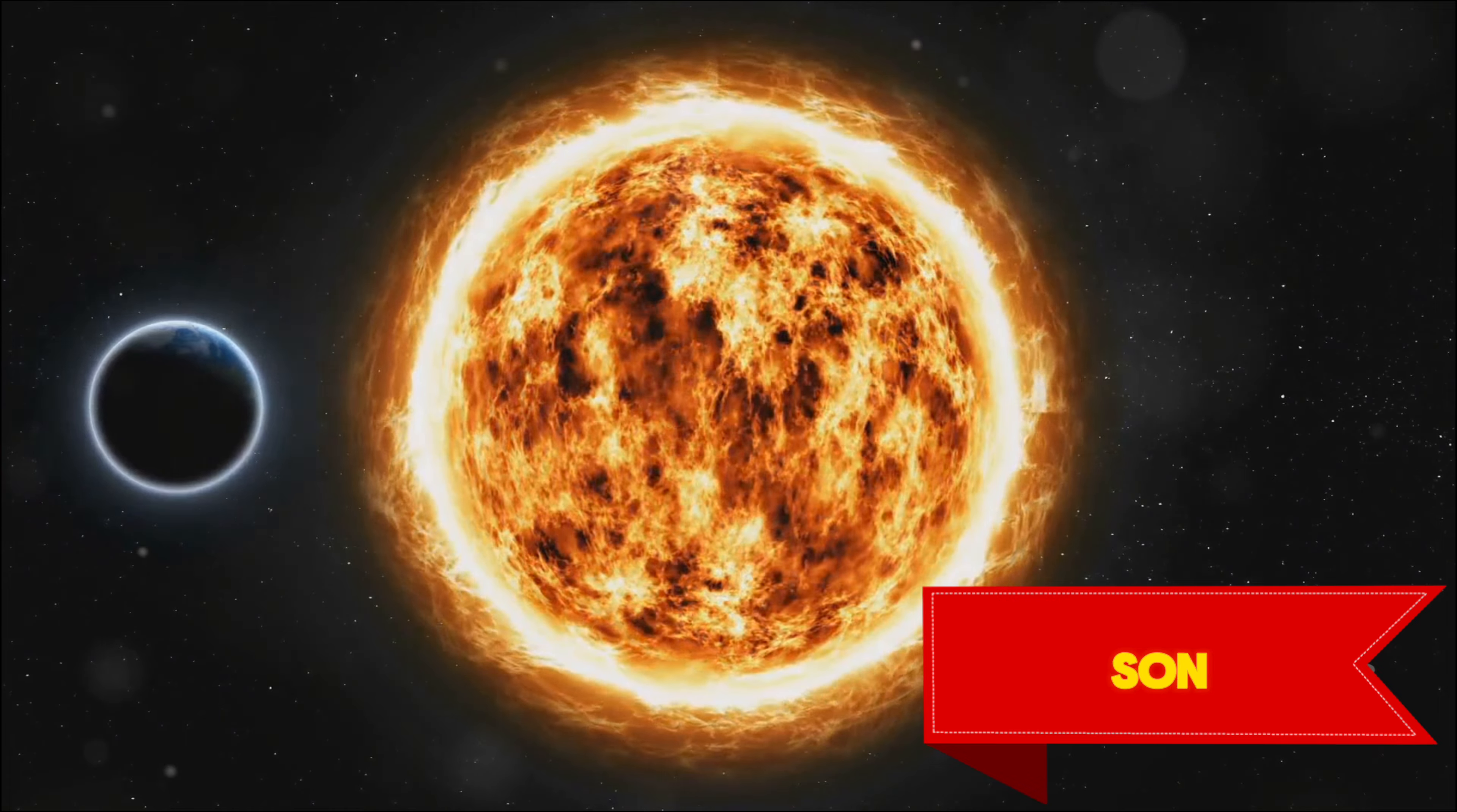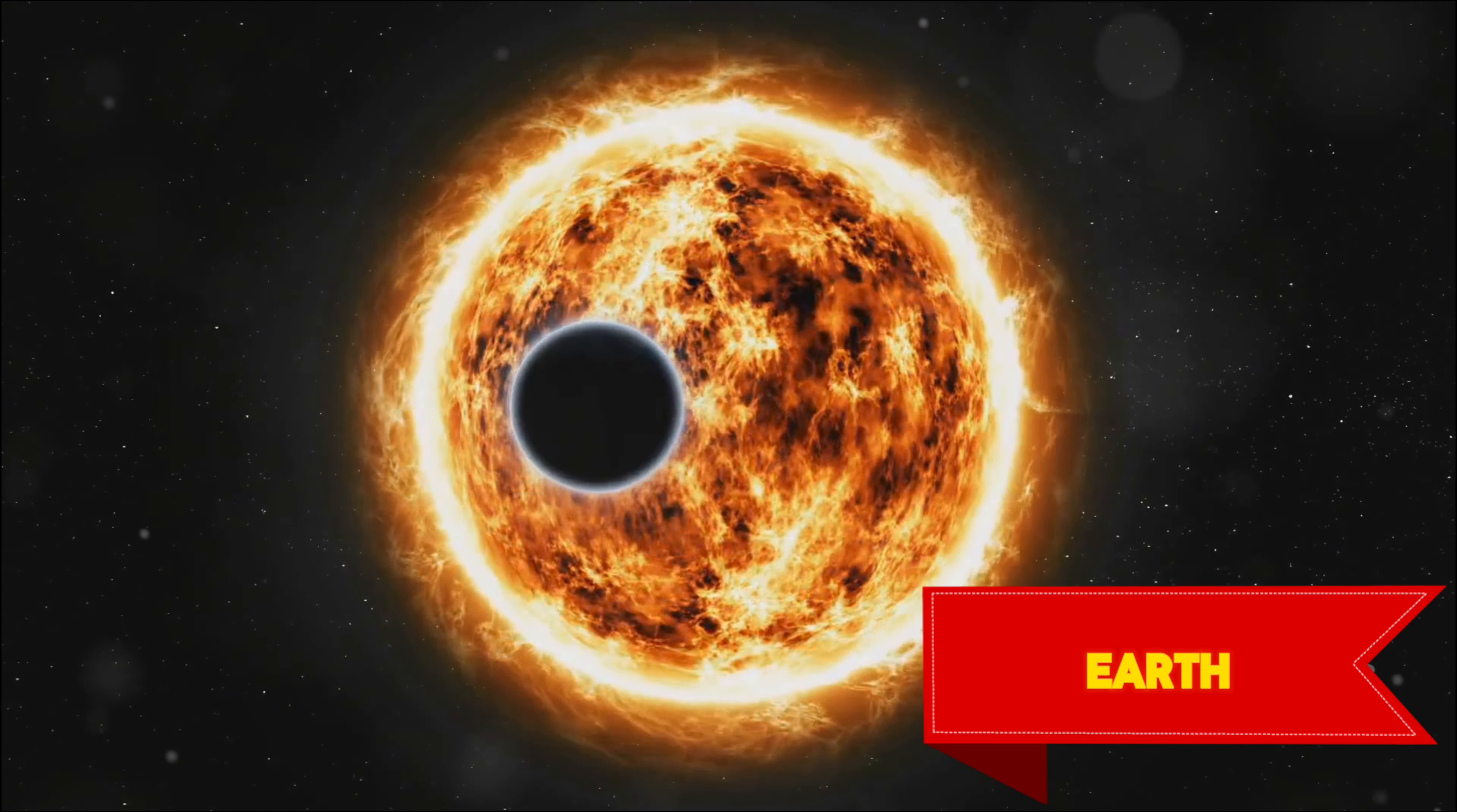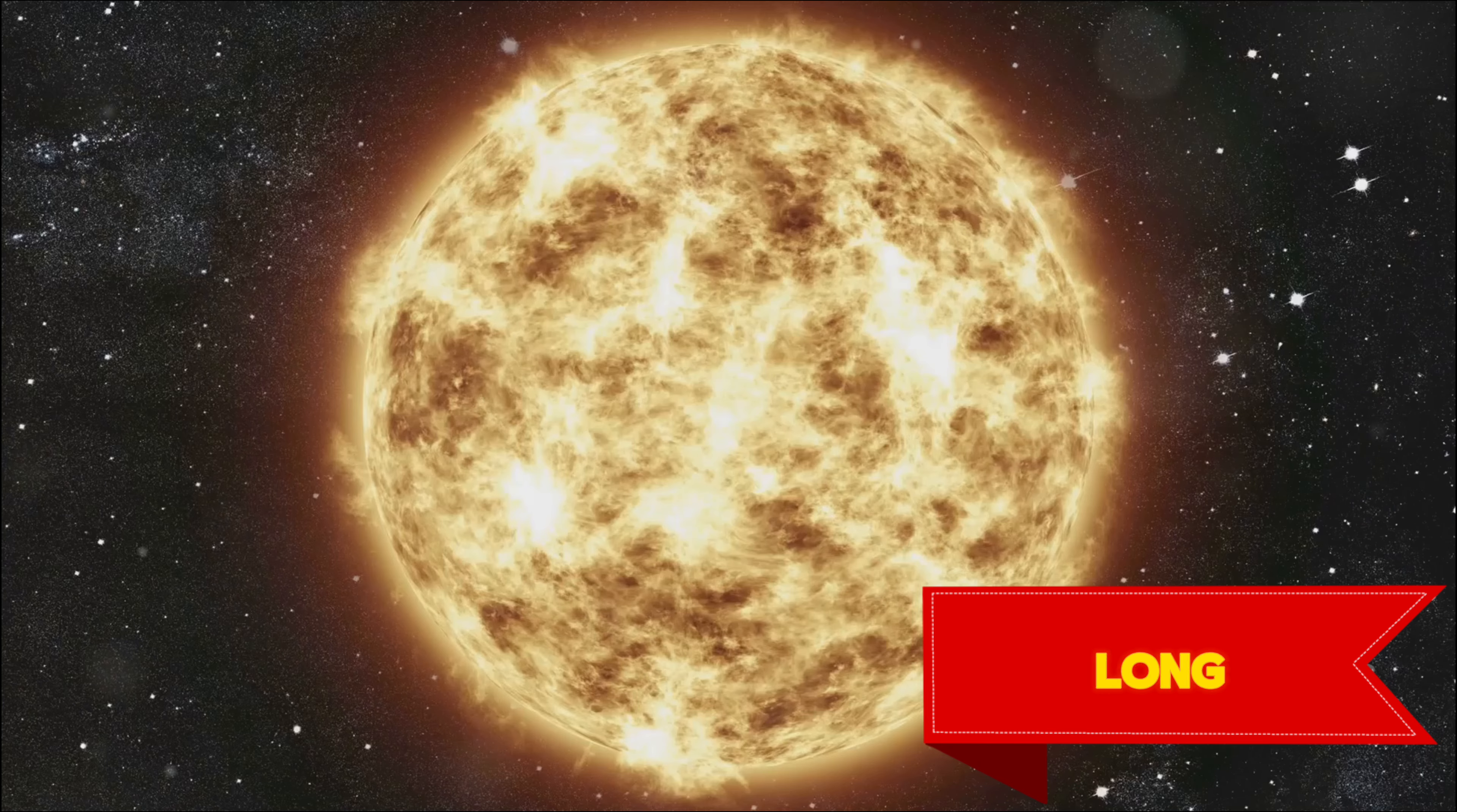This star, just like our Sun, is a G-type star, hinting at the possibility of similar conditions to Earth. The planet itself is about five times the size of Earth, and it takes a leisurely 385 days to orbit its star, giving it a year almost as long as our own.